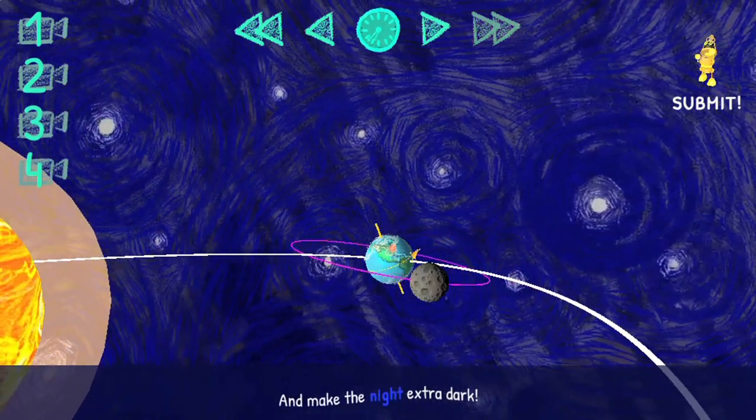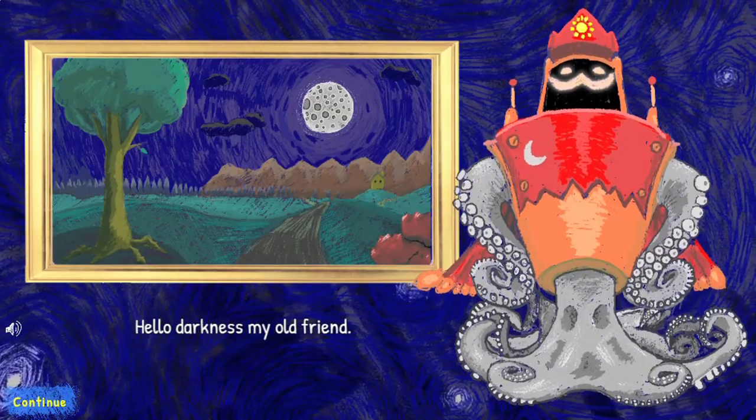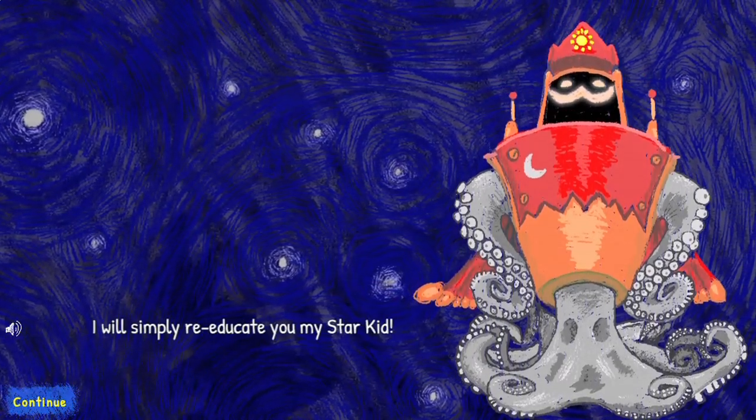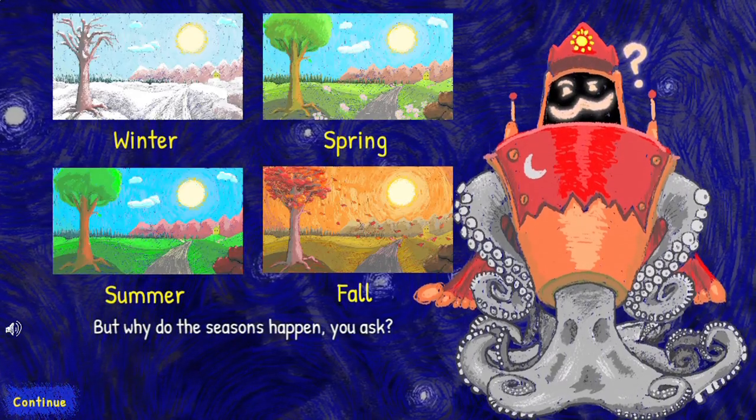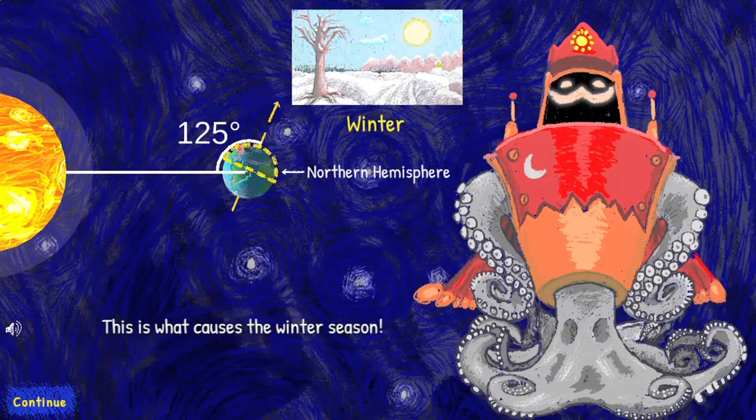He will ask you to help him create his masterpieces by moving the Earth into the correct orbit to get the right times of day and seasons so he can paint his masterpieces.